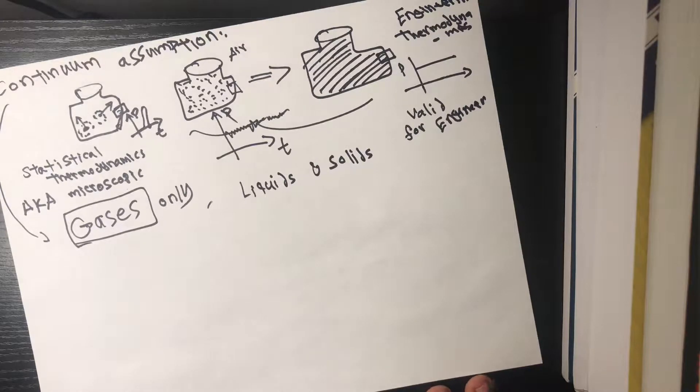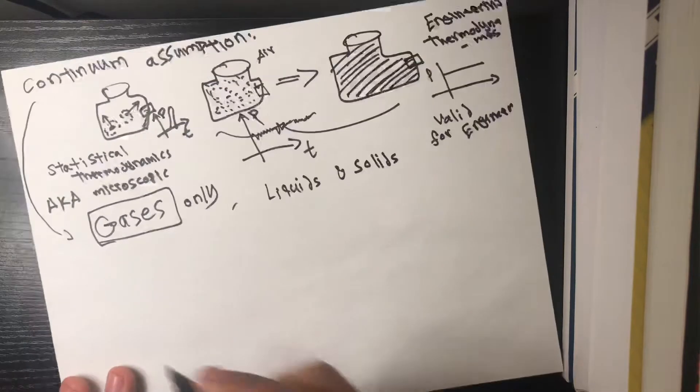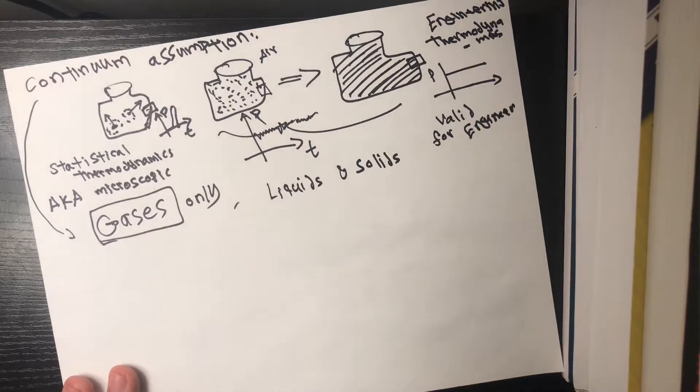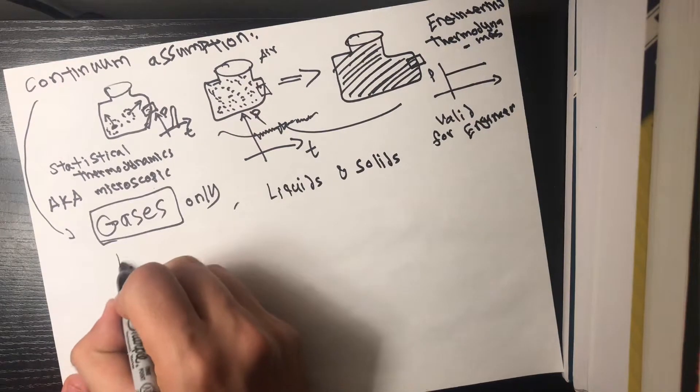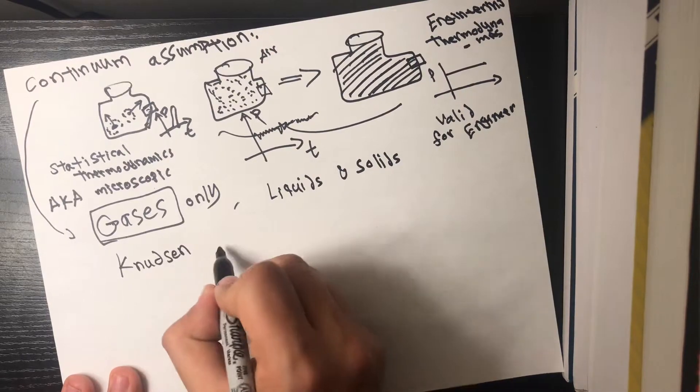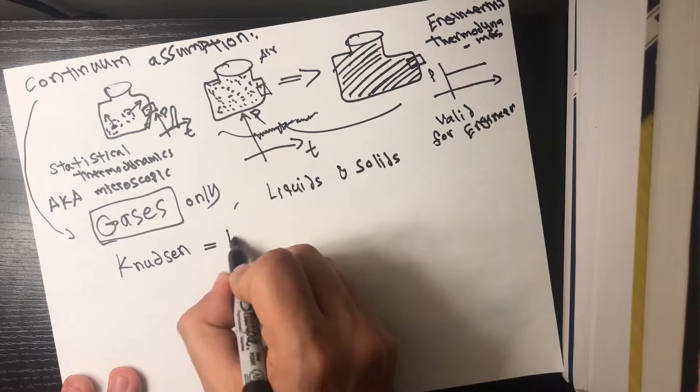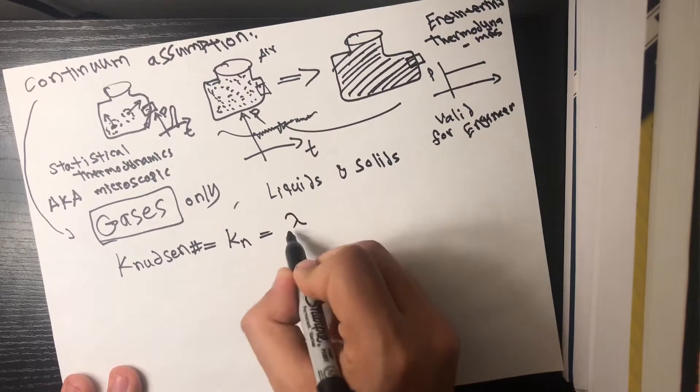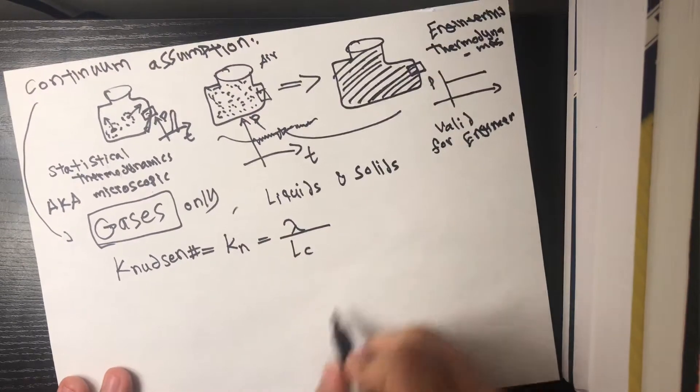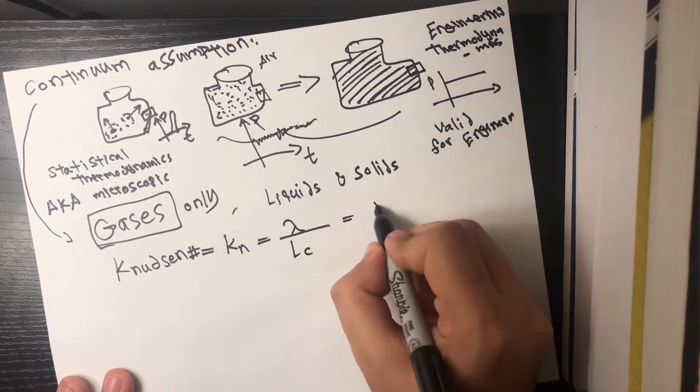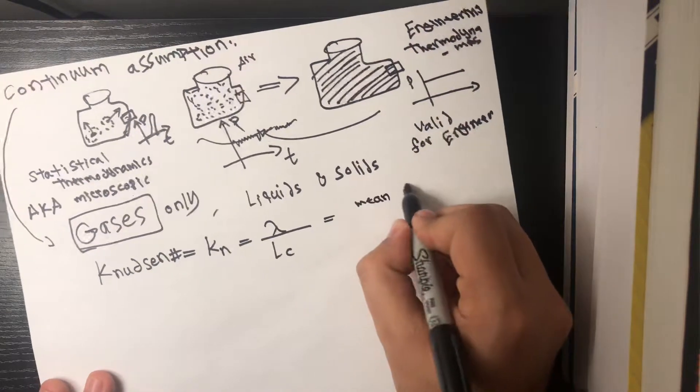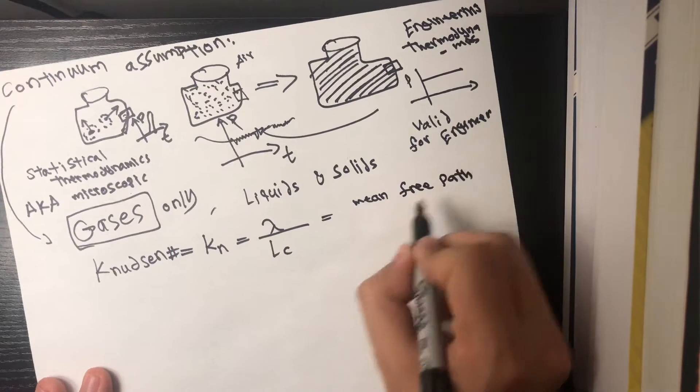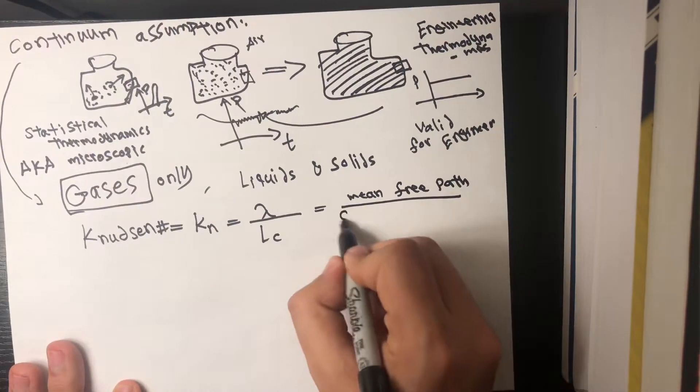Now what is the Knudsen number I mentioned earlier? This is another way to quantify or check our assumptions validity. Knudsen number known as Kn is equal to lambda over LC where lambda is the mean free path and your LC is the characteristic length.